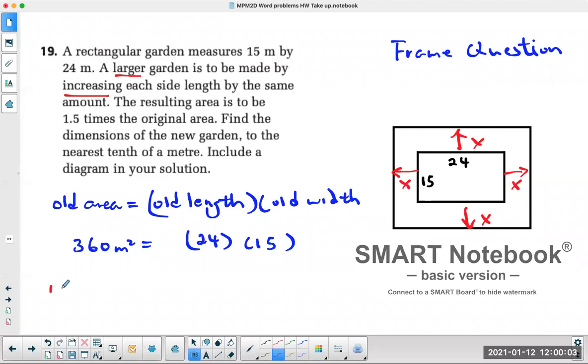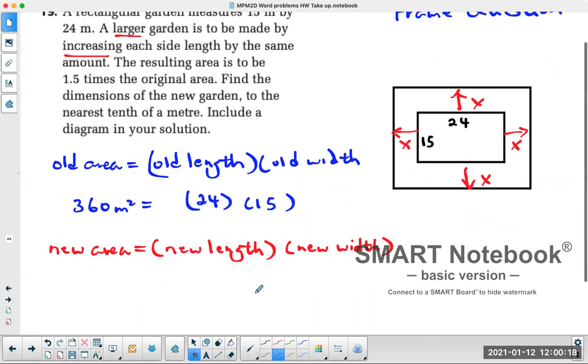Now you want to set up the new area, which you would need a new length multiplied by the new width. What's the relationship between the new area and the old area? Here it says the resulting area, which is the new area, is 1.5 times the original area.